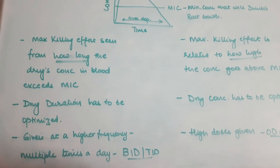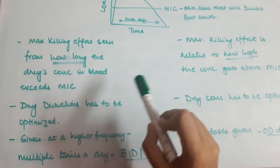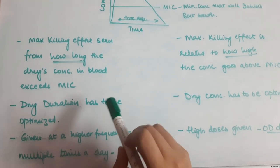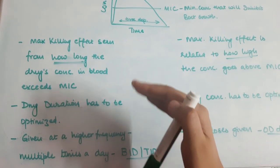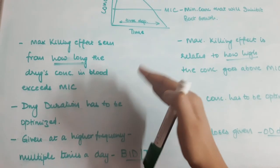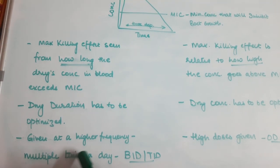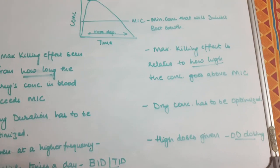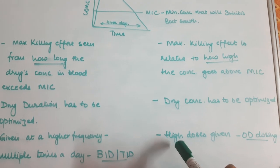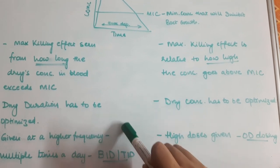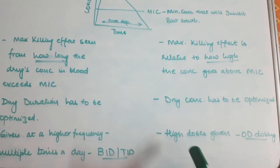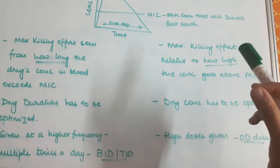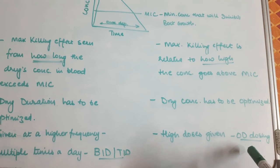In time-dependent killing, since the action depends on how long the drug's concentration exceeds MIC, it is given at a higher frequency. If we give it more frequently, the blood concentration of the drug will remain higher and bring a better effect. So it is given multiple times a day — BID and TID dosing. Whereas in concentration-dependent drugs, high doses are given because we need to achieve one peak at one time, so we prefer giving high doses to attain a good blood concentration quickly. OD dosing of the drugs is given.